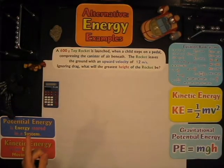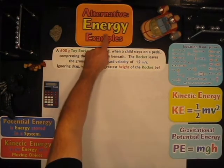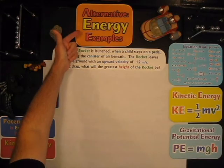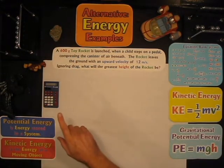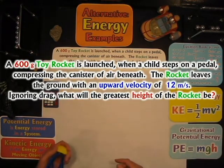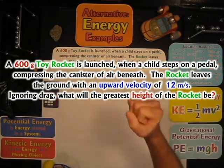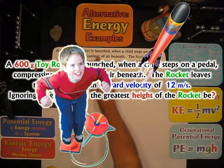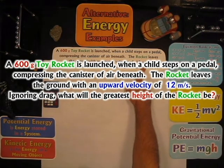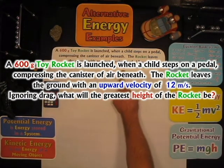I'm going to call these the alternative energy examples, because energy can be an alternative way to calculate problems like this. Here's the question: a 600-gram toy rocket is launched when a child steps on a pedal — you step on it, it compresses a canister and shoots the rocket up. The rocket leaves the ground with an upward velocity of 12 meters per second. Ignoring drag, what will the greatest height of the rocket be?